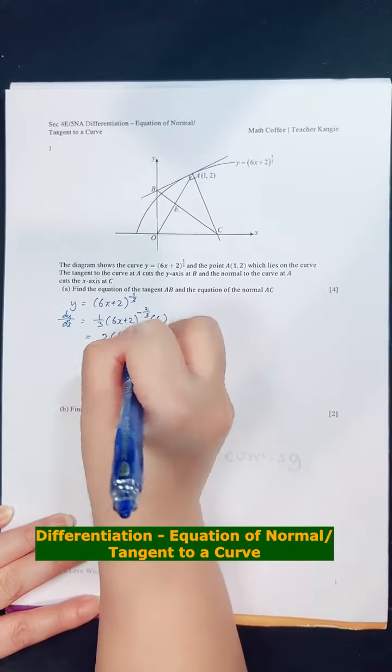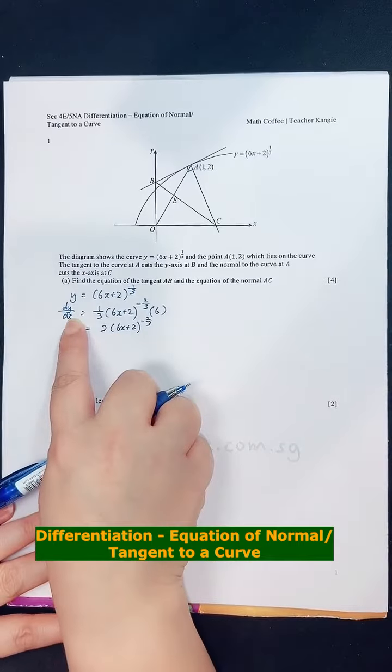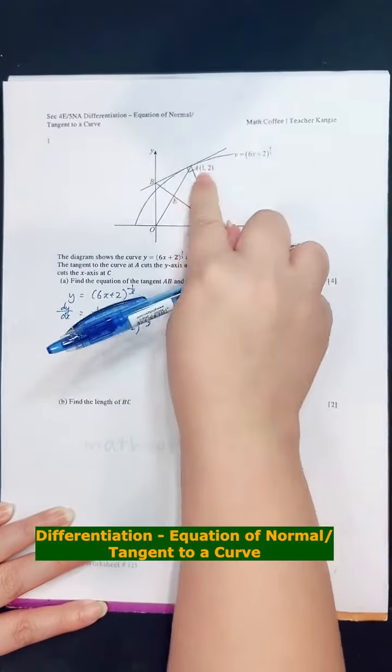One third times 6 is 2, so it's 2 bracket 6x plus 2 minus 2 third. So this is my dy/dx. I need to find the gradient of the tangent, so I need to substitute the x because I want to find gradient of this tangent at this point, so I will sub the x equals to 1.